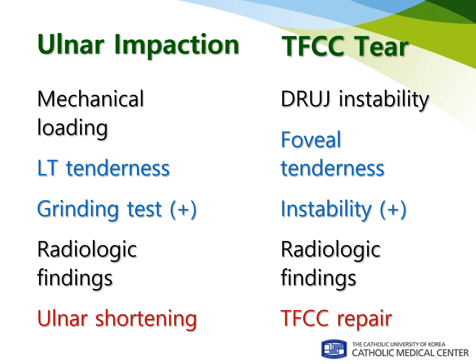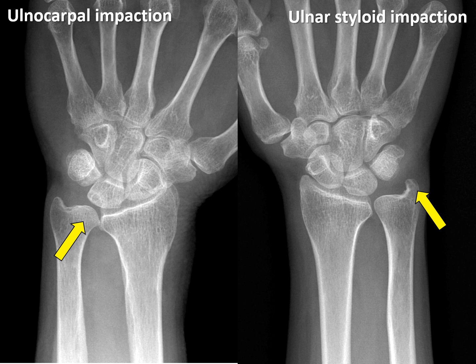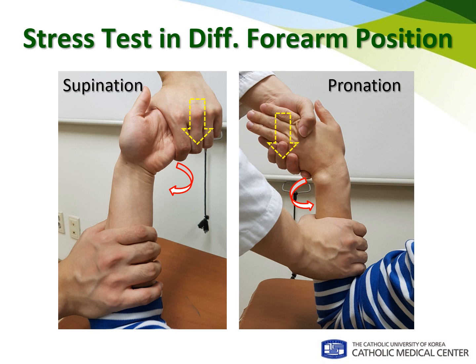I think ulnar impaction syndrome and TFCC tear are closely related to each other, but their physical examination and stress tests are totally different. Diagnosis of ulnar impaction syndrome relies on physical examination. Patients usually have tenderness around the lunotriquetral area and ulnocarpal area in cases of ulnocarpal impaction syndrome, and we need to do some provocative tests such as the ulnocarpal stress test. Differentiation between ulnocarpal impaction and ulnar styloid impaction is important because we only do simple procedures such as ulnar styloid resection for the ulnar styloid impaction patient. To differentiate these two disease entities, stress testing in different forearm rotations is very useful.